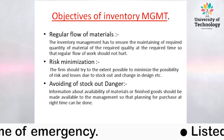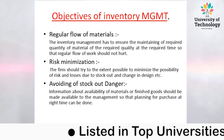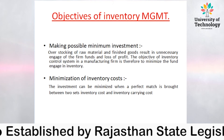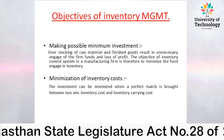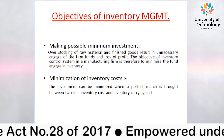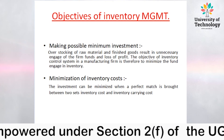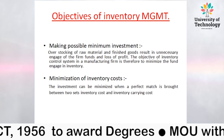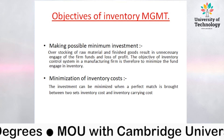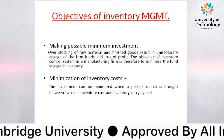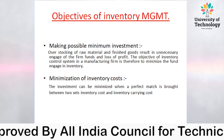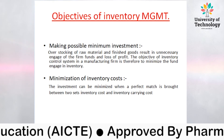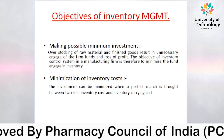Avoiding stock-out danger: information about availability of material or finished goods should be made available to management so that purchasing can be planned at the right time. Next, making possible minimum investment: over-stocking of raw material and finished goods results in unnecessary engagement of funds and loss of profit. The objective of inventory management is therefore to minimize the funds engaged in inventory without causing stock-out situations.